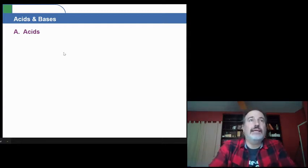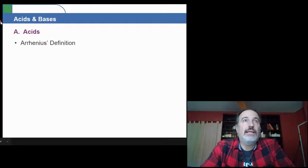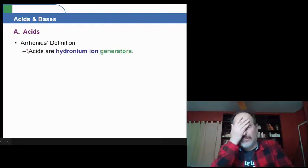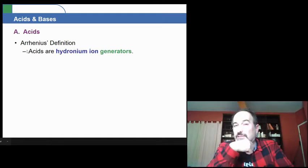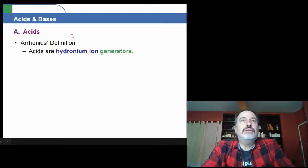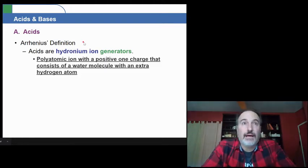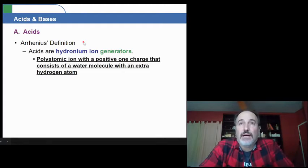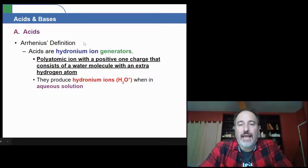The first one we're going to look at, it was first developed by a scientist named Arrhenius. Now, Arrhenius, he was a Swedish scientist. And I want to say from the 1600s. Actually, no, I'm sorry. He was from the 1800s. My mistake. And he defined them as hydronium ion generators. Now, a hydronium ion is a polyatomic ion with a positive one charge that consists of a water molecule with an extra hydrogen atom on it.